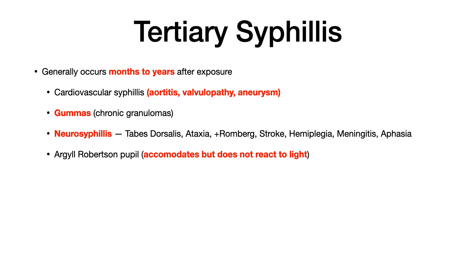On your exam, if the test writer gives a history of unprotected sexual intercourse, potentially a comorbid history of HIV, and then describes vague neurological symptoms, you want to think about syphilis. Additionally, a very high-yield finding is the Argyll-Robertson pupil, where the accommodation reflex is intact but the response of the pupils to bright light is not intact. To summarize tertiary syphilis: cardiovascular symptoms, gummas, neurosyphilis, and Argyll-Robertson pupils are your key findings.